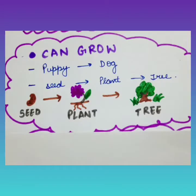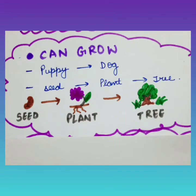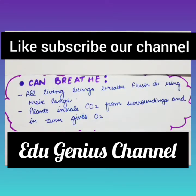The next feature is: living things can grow. For example, a puppy grows into a dog. A seed grows into a plant, and a plant grows into a huge tree. The next feature is: living things can breathe. All living beings breathe fresh air using their lungs.